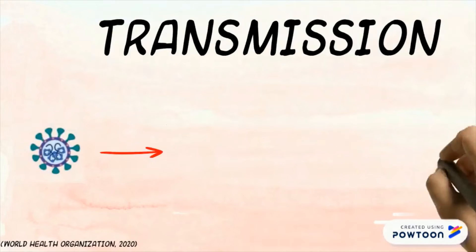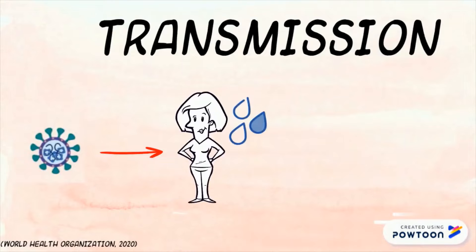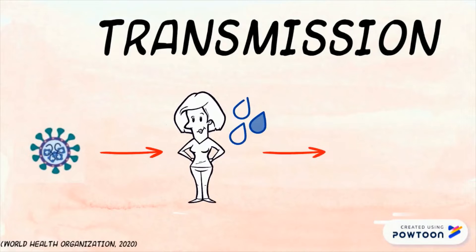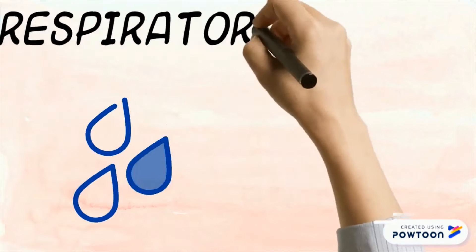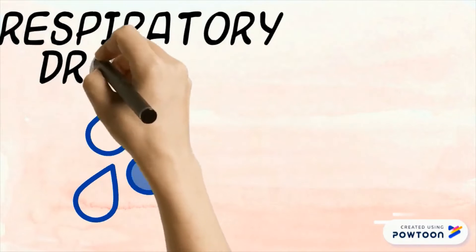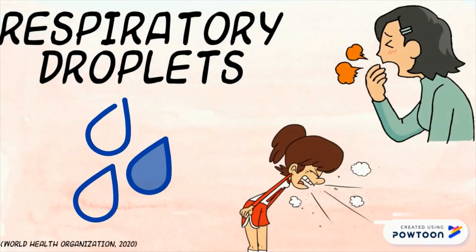COVID-19 is transmitted by respiratory droplets through close contact with an infected individual. Respiratory droplets can be transmitted through coughing, sneezing, and saliva.